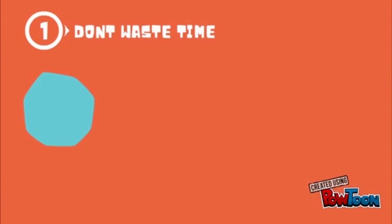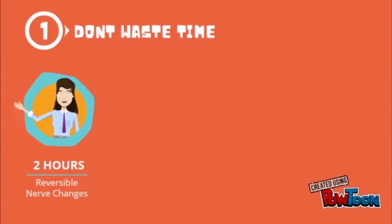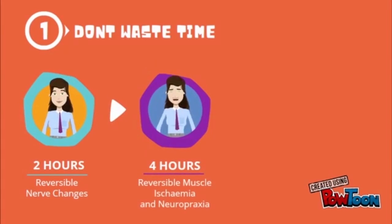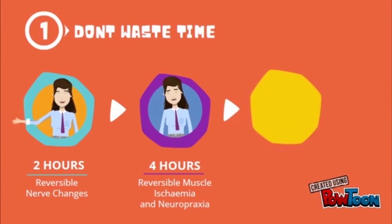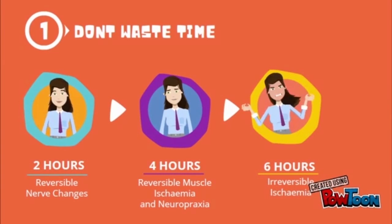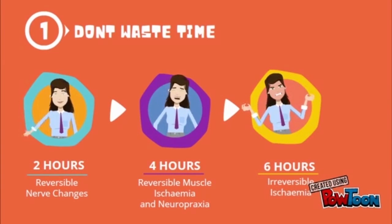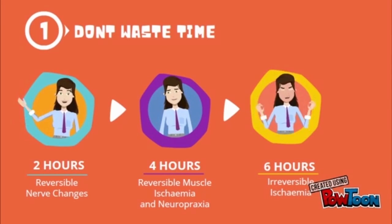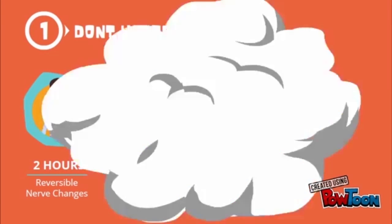Time is of the essence. At 2 hours, reversible nerve changes occur. At 4 hours, there is reversible muscle ischemia and neuropraxia. At 6 hours, there is irreversible damage.